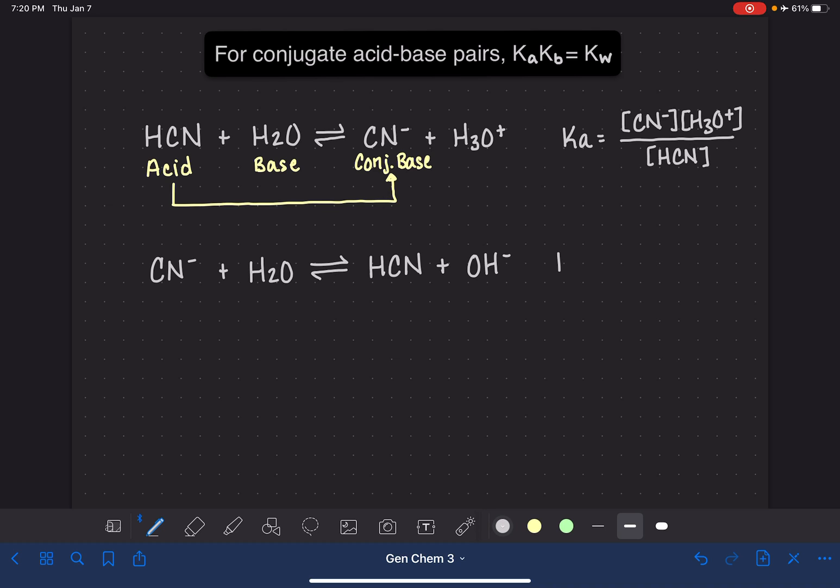If we wanted to write an equilibrium expression for this, it would be a KB, again, because cyanide is a base. And this KB would be HCN times OH-, our two products of the reaction, divided by CN-, the reactant.